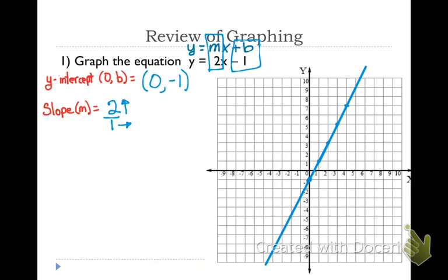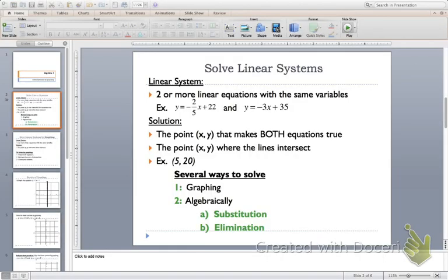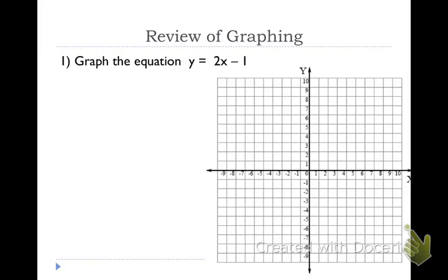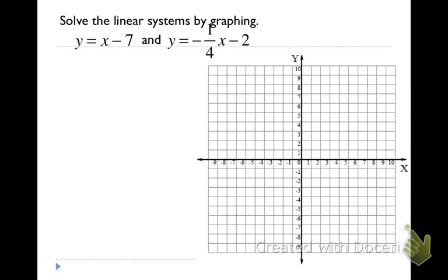Now let's look at solving a system by graphing. I would like you to solve this linear system. We're going to graph each one of these lines and then see where they intersect, and check using algebra to see if that's the solution. So on my first equation, I'm going to identify the y-intercept and the slope. My y-intercept is negative 7, so I'm going to plot a point at (0, negative 7) — a nice big fat point.